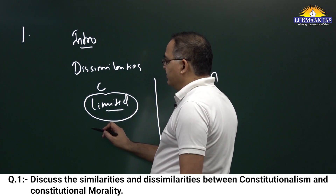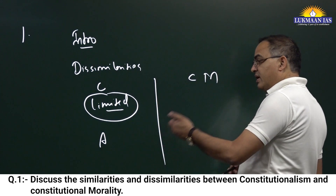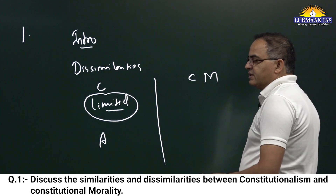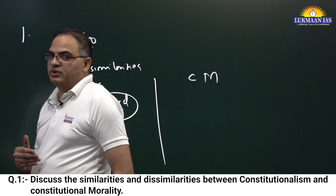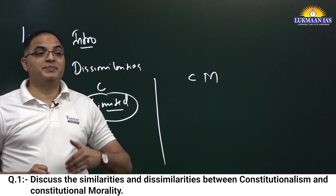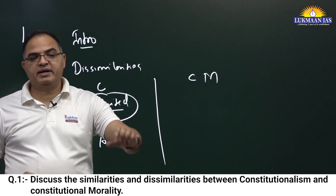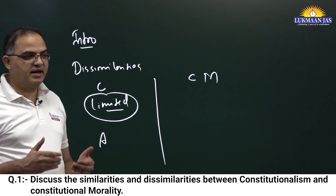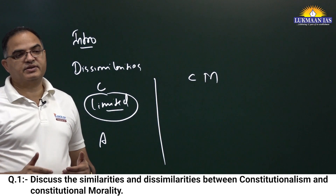Constitutionalism checks absoluteness and results in the enforcement of the constitution. The main point is that constitutionalism is about limited government — it tries to eliminate a system of absolute government. The idea came from a written constitution.